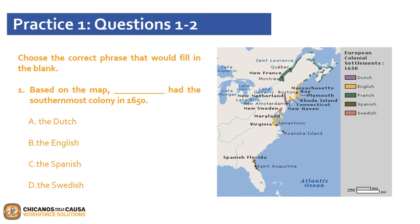Now that we have analyzed the map, let's answer the questions. Question 1 asks: choose the correct phrase that will fill in the blank. Based on the map, blank had the southernmost colony in 1650. Our options are A, the Dutch; B, the English; C, the Spanish; D, the Swedish. Let's locate the southernmost colony. It looks like Spanish Florida had the southernmost colony in 1650. So if you chose C, the Spanish, you are correct.